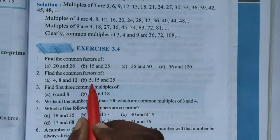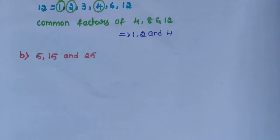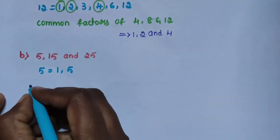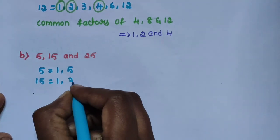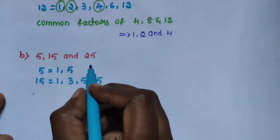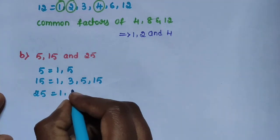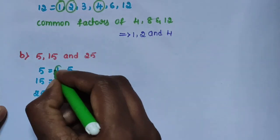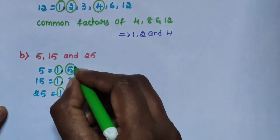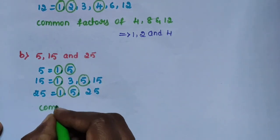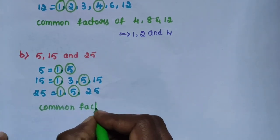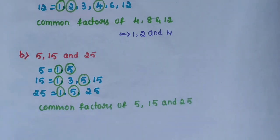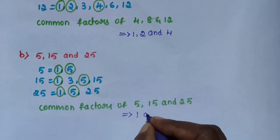Sub-question B: 5, 15, and 25. Factors of 5 are 1, 5. Factors of 15 are 1, 3, 5, 15. Factors of 25 are 1, 5, 25. The common factors of 5, 15, and 25 are 1 and 5.